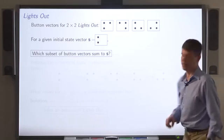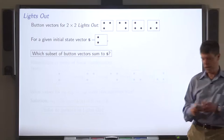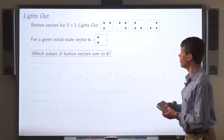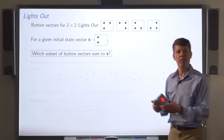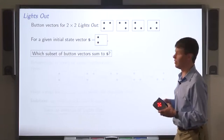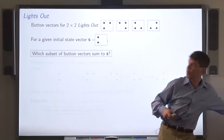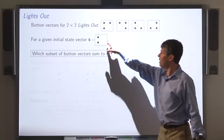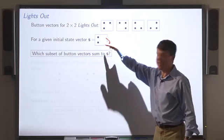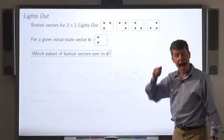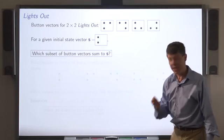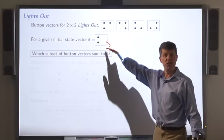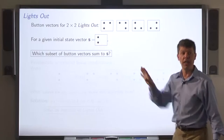Here's another example. Recall Lights Out. For simplicity, I'll use the two-by-two Lights Out as an example. Here are the button vectors for Lights Out, and here's an initial state vector. For this initial state vector, I want to know how do I solve the puzzle — in particular, which subset of the button vectors have to be pressed in order to transform this to the all-lights-out state.